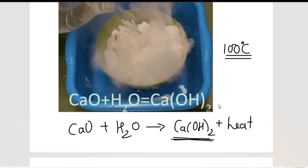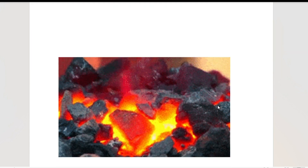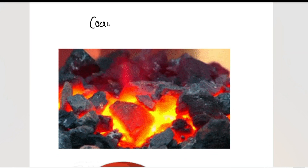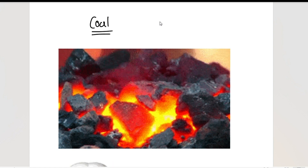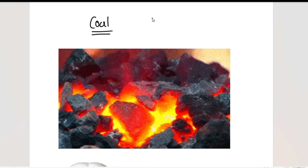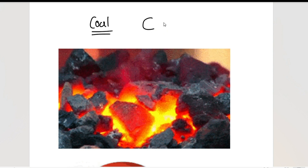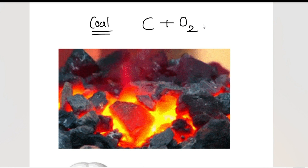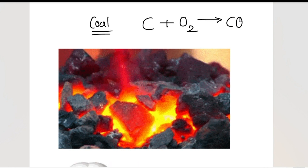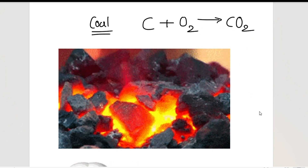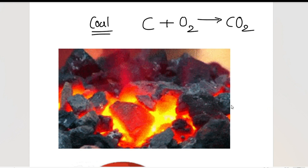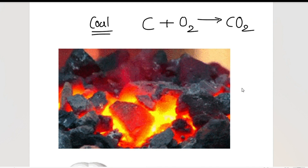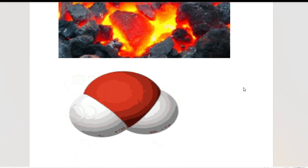Let's take more examples. This is coal. Burning of coal — coal is a form of carbon, symbol C. To burn anything we need oxygen, and what we get is carbon dioxide. You can see it glowing red hot. Two reactants, one product — this is also a combination reaction.